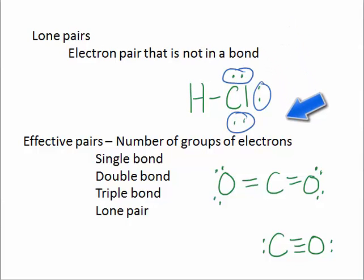An effective pair is the number of groups of electrons that are around an atom. So an effective pair can be a single bond, a double bond, a triple bond, or a lone pair.